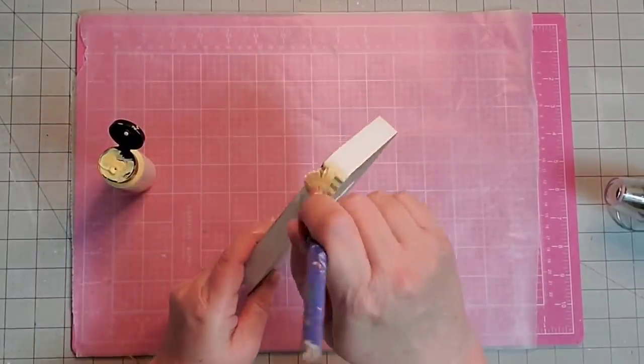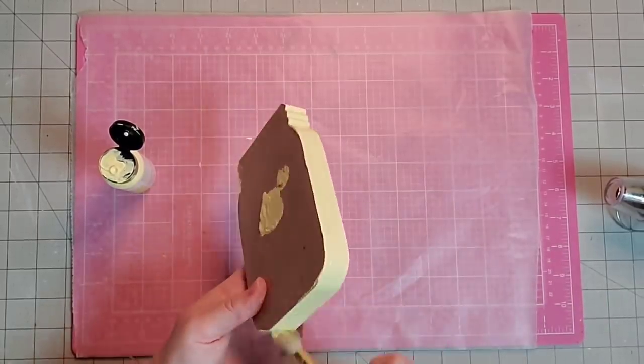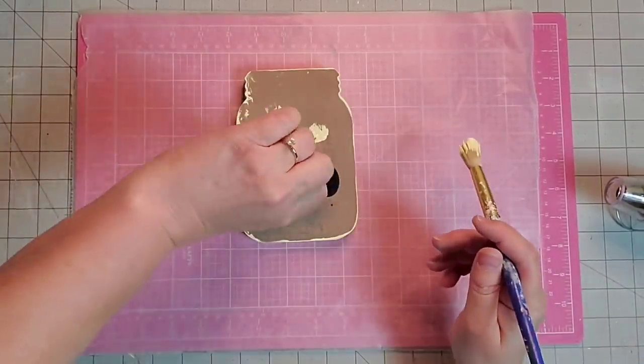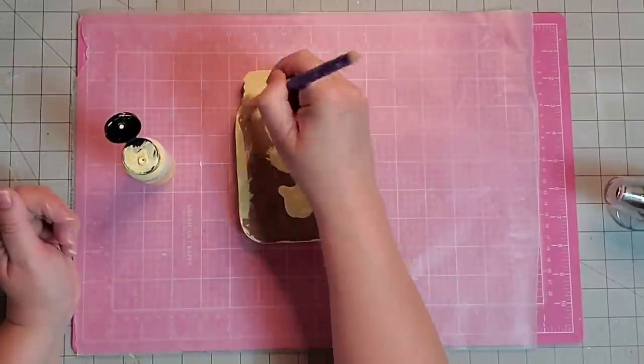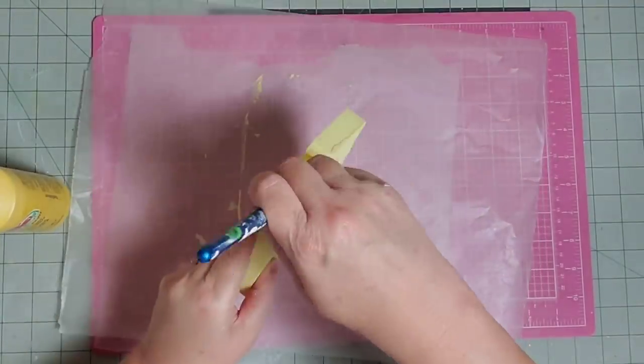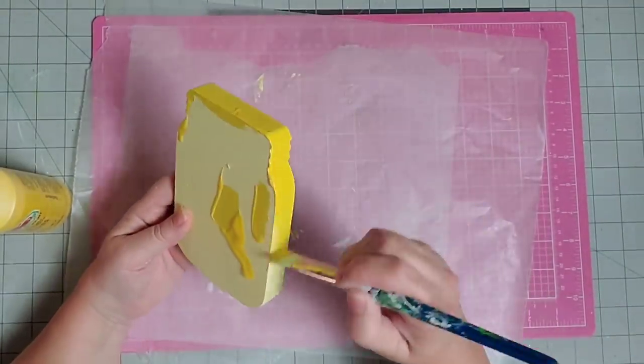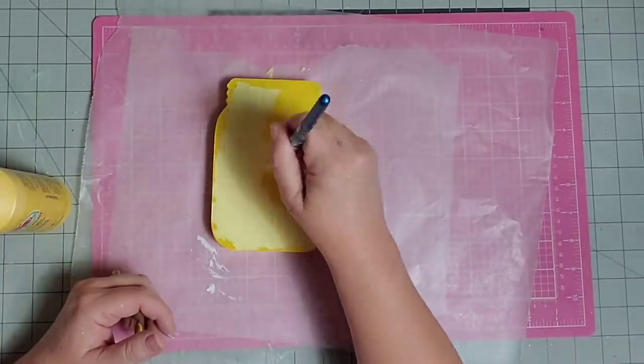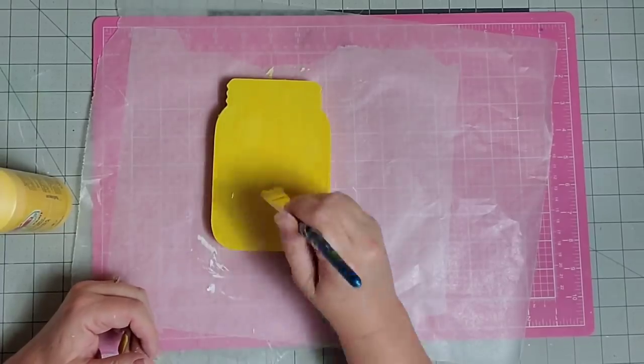Now I'm going in with the yellow chalk paint and I'm going to paint all of the edges. What was the back will now be the front. Once it's dry, I'm coming back in with acrylic paint and painting it in this much brighter yellow color.